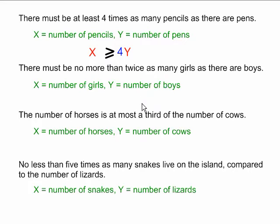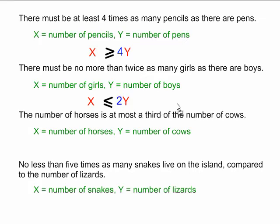There must be no more than twice as many girls as there are boys. The first thing I do is place an x and a y. 'No more than' indicates a less than or equal to sign. The word 'twice' represents two — it means something is being multiplied by two, either the x or the y. To figure out which one, I ask myself: which one will be the larger number? No more than twice as many girls as boys means far more girls than boys. We would not multiply the larger number by two to equal the smaller — that doesn't make sense. We will multiply the number of boys by two, so we're multiplying the y by two in this case.